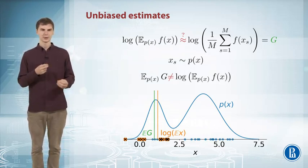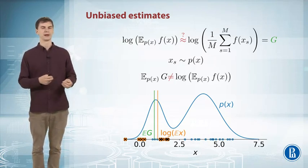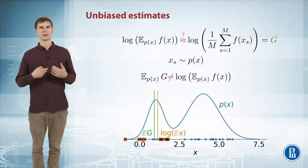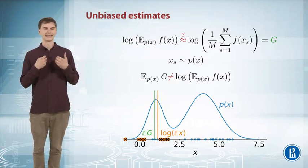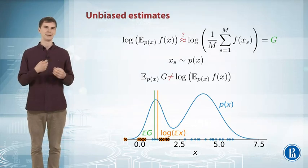So all these red crosses are lying not around the true value, but around some smaller value. And thus you're not doing the right job. You're doing biased estimation of your function logarithm of an expected value.